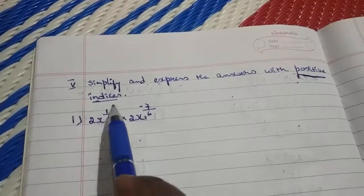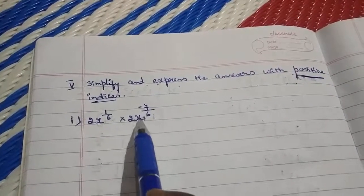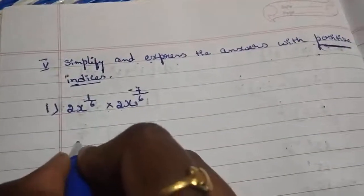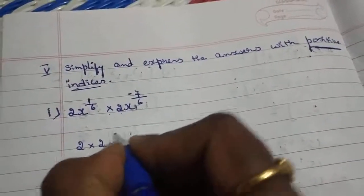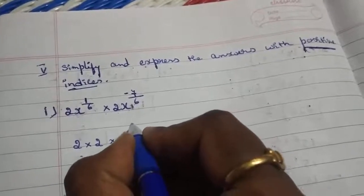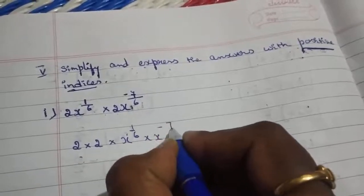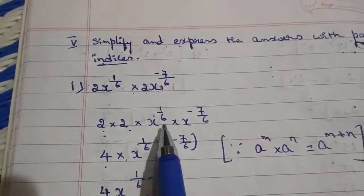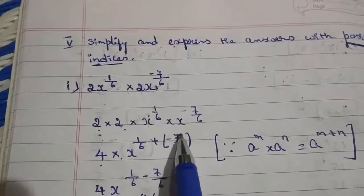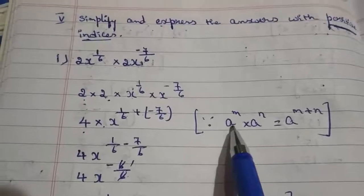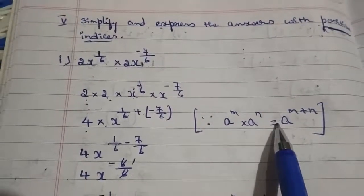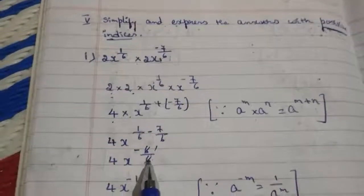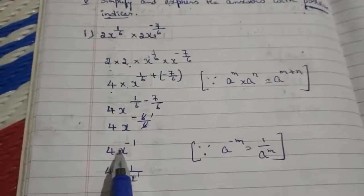First question: 2x to the power of 1 by 6 into 2x to the power of minus 7 by 6. Here we will multiply the coefficients with variables. After grouping, we will multiply 2 to 4, and x to the power of 1 by 6 plus minus 7 by 6, by applying the law of exponents: a to the power of m into a to the power of n equals a to the power of m plus n. After simplifying, minus 6 by 6 gives 4x to the power of minus 1.